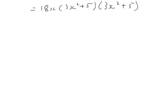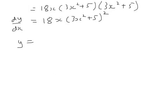So it's 18x, and then it's 3x squared plus 5 all squared. So this is dy by dx. So what was the original expression? The original expression was y equals 3x squared plus 5 to the power 3. Now, notice that we've got 3x squared plus 5 to the power 3. When we differentiate it, we've got 3x squared plus 5 to the power 2.